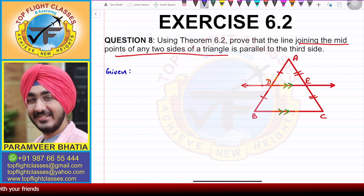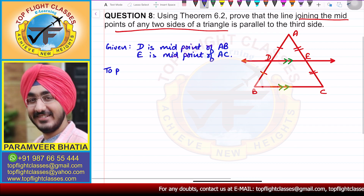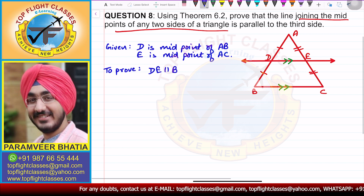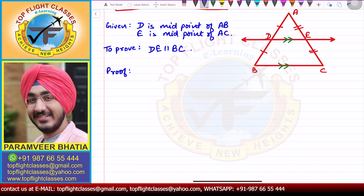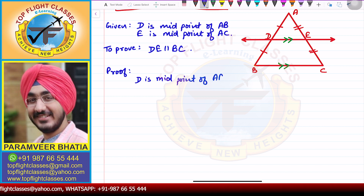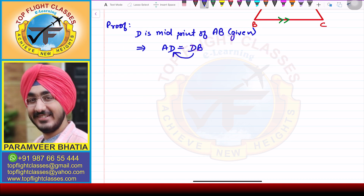Writing what is given to us: D is the midpoint of AB, and E is the midpoint of AC. From this, we get that AD is equal to DB. Taking DB to the other side, we get AD/DB is equal to 1, and this becomes our first equation.